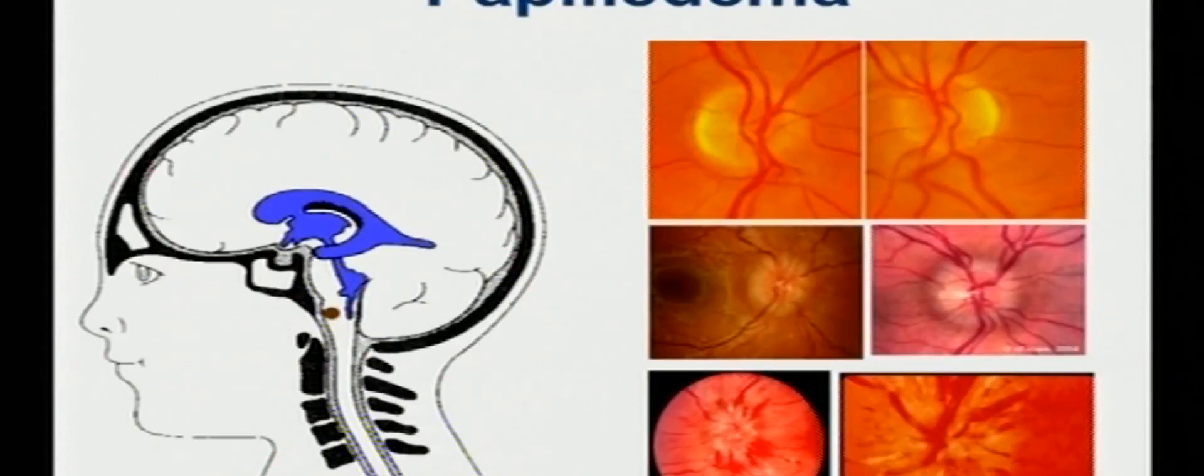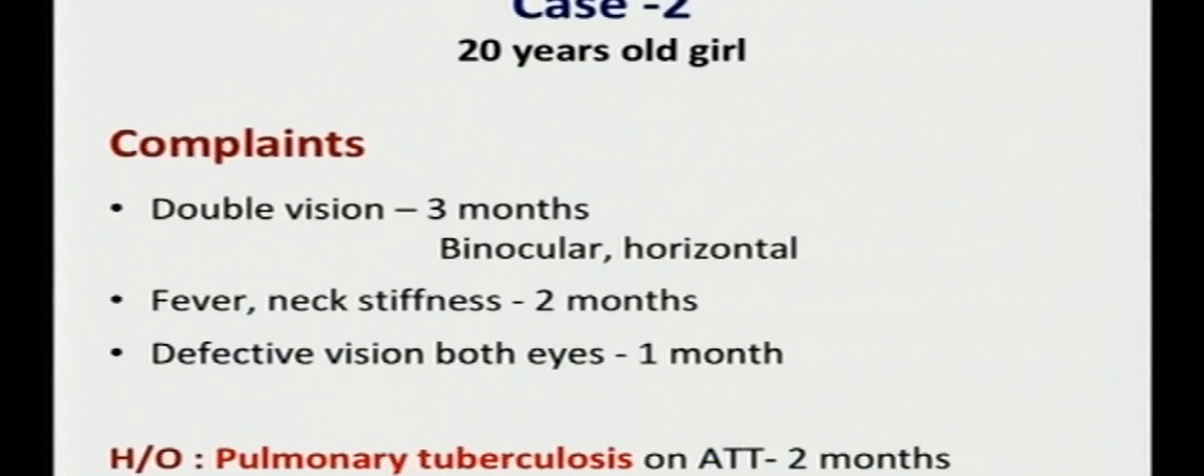The second one is papilledema after optic neuritis. This is a 20 years old girl. She complained of double vision of three months duration, binocular and horizontal. She also gave history of fever, neck stiffness for two months and defective vision in both eyes for one month. She gave a history of pulmonary tuberculosis on ATT for two months. To emphasize, whenever a patient with pulmonary tuberculosis complains of defective vision, two things have to be kept in mind: it could be toxic optic neuropathy due to ethambutol or intracranial tuberculosis which can be in the form of TB meningitis or tubercloma.